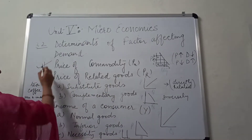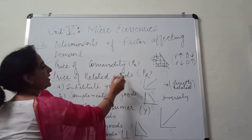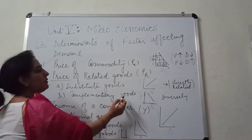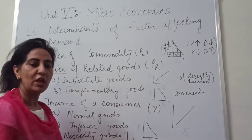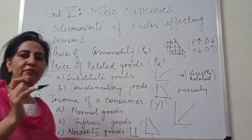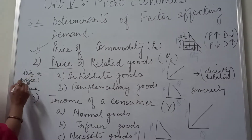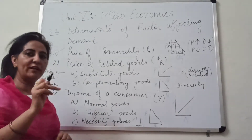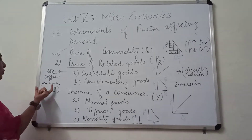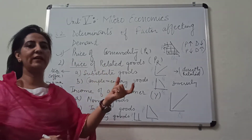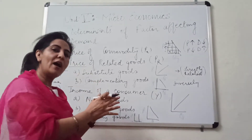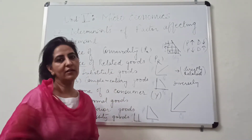The second factor is price of related goods. There are two types of goods: substitute goods and complementary goods. Substitute goods are those goods which can be used in place of the first one — for example, tea and coffee; they are substitutes for each other. Complementary goods are used together, such as pen and ink, or car and petrol.